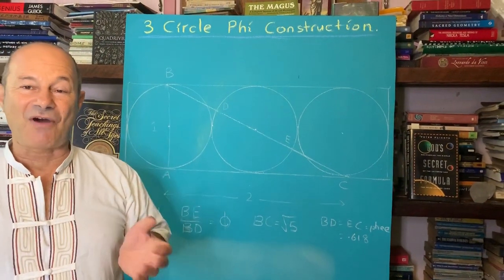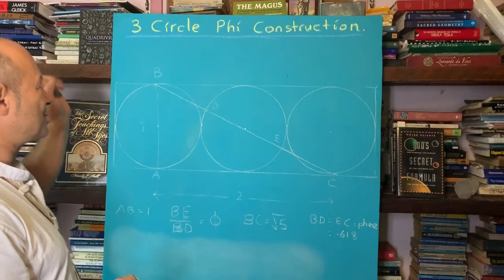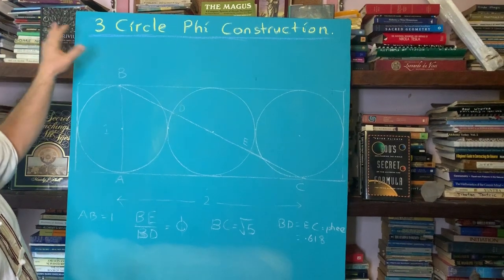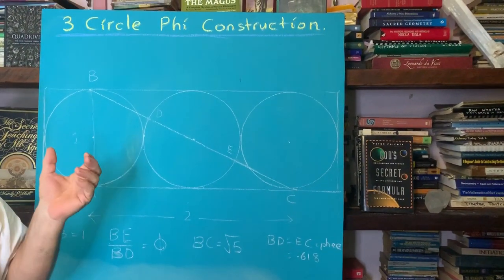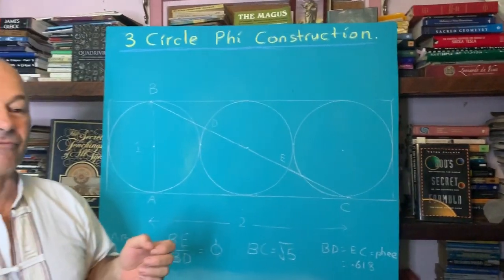I'd like to establish another Phi-Pi connection. I'd like to show how a three-circle construction will reveal that the circle is completely embedded with golden ratio.